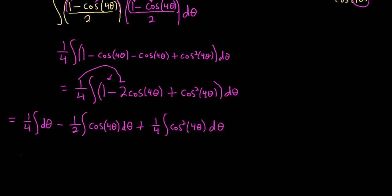Integrating the first: the integral of 1 is theta, giving 1 fourth theta. For the second: the integral of cosine of 4 theta — since the derivative of sine is cosine and we have 4 theta, we divide by 4 — gives sine of 4 theta over 4. So the second term becomes minus 1 half times sine 4 theta over 4, which is minus 1 eighth sine 4 theta.